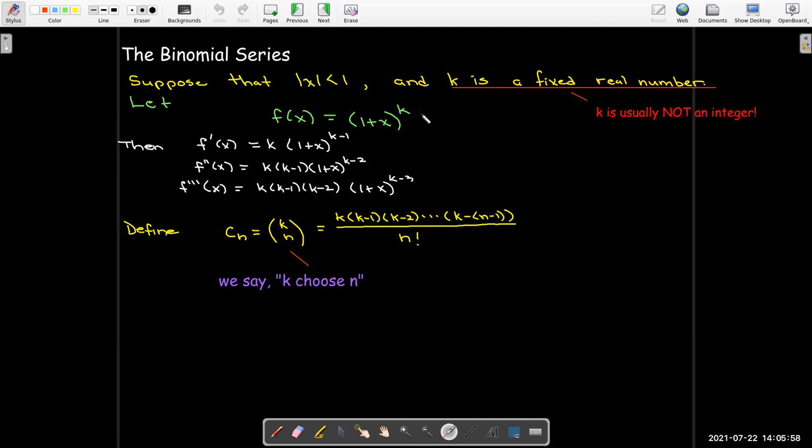Now, in fact, we're going to borrow the notation from the binomial theorem where we use this big parentheses with a k and an n in a column like this. And we say k choose n. It doesn't really make sense. This is something that comes from counting or combinatorics. But it is very useful shorthand notation and has essentially the same definition as k choose n in the binomial theorem.